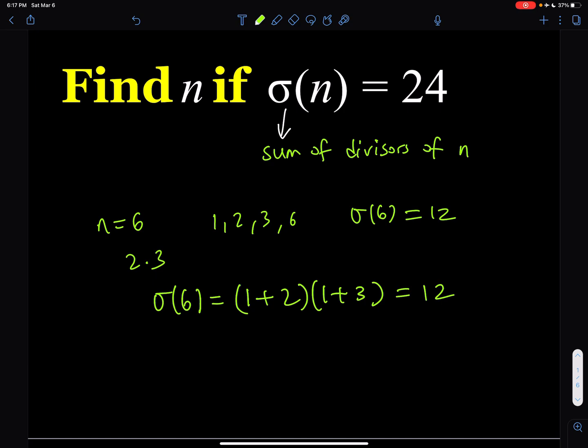So for smaller numbers, they're very easy to experiment with. You can just go ahead and test it out. What is sigma of 5? What is sigma of 6? 7, 8, 9, 10, 11. You can just continue.